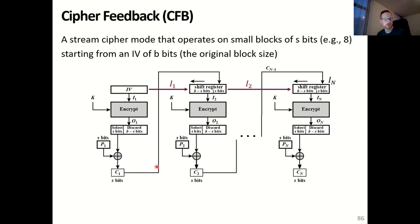This ciphertext block is then chained back for the encryption of the second block by combining it with the first B-S bits of the initialization vector. So again we get B-S plus S bits, which results in B bits. These B bits are encrypted, the last B-S bits are discarded, and then with XOR it is combined with our second plaintext block, which is also S bits, resulting in our second ciphertext block, repeating the process.